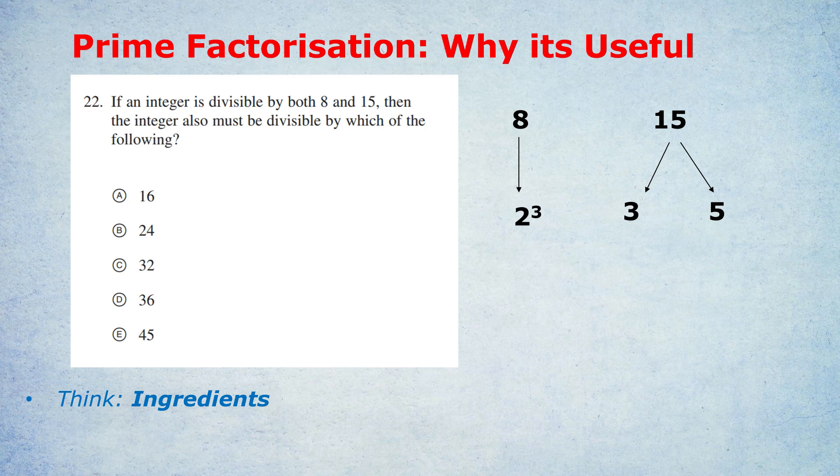So if an integer is divisible by both 8 and 15, I don't think of the 15 times tables or the 8 times tables. I just think to myself, what you're trying to tell me is that the integer is divisible by 3 twos (2 cubed), a 3, and a 5. Or in even simpler terms, that integer must have the ingredients of a 5, a 3, and 3 twos. So we know it has those ingredients.